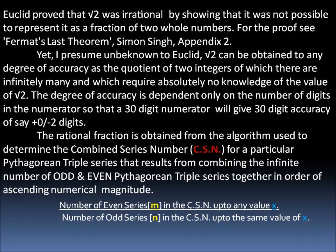The degree of accuracy is dependent only on the number of digits in the numerator, so that a 30-digit numerator will give 30-digit accuracy to, say, plus or minus 2 digits.